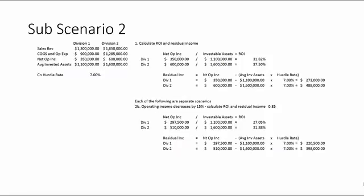In the next scenario, operating income decreases by 15 percent, so we use a multiplier of 0.85. For Division 1 we take $350,000 times 0.85, giving $297,500, divided by $1.1 million to get 27.05 percent ROI. Division 2 gives 31.88 percent. When operating income decreases, residual income also goes down, and you can see the sensitivity comparing the two divisions.